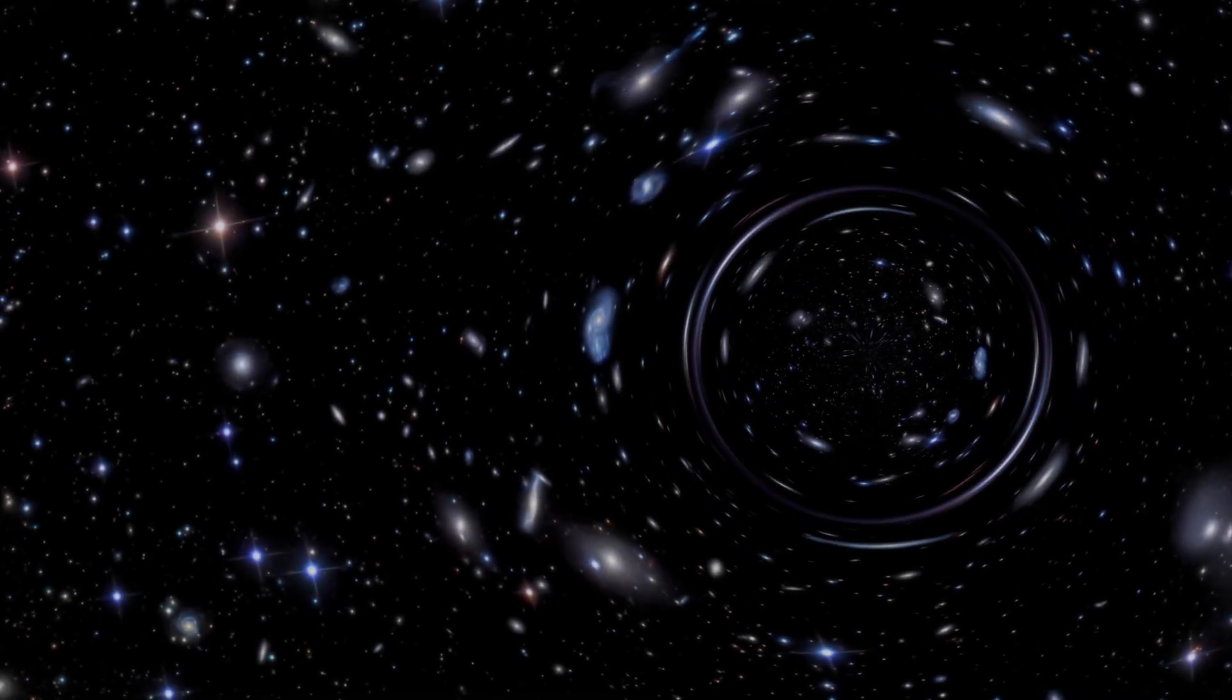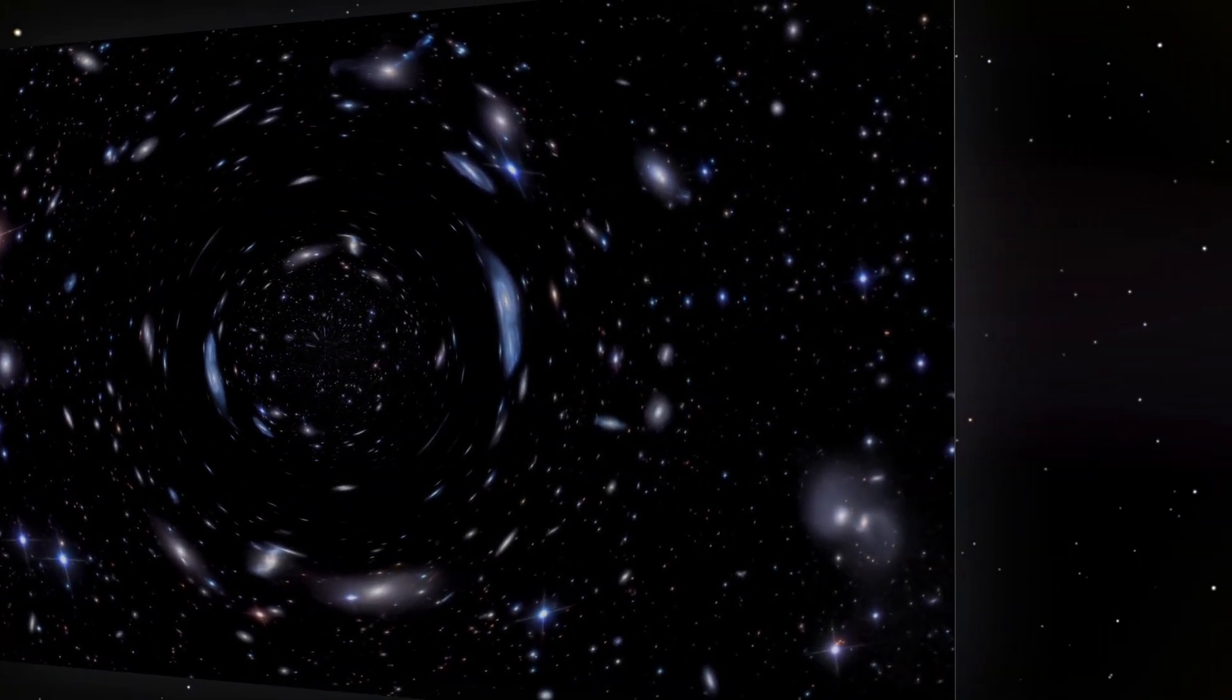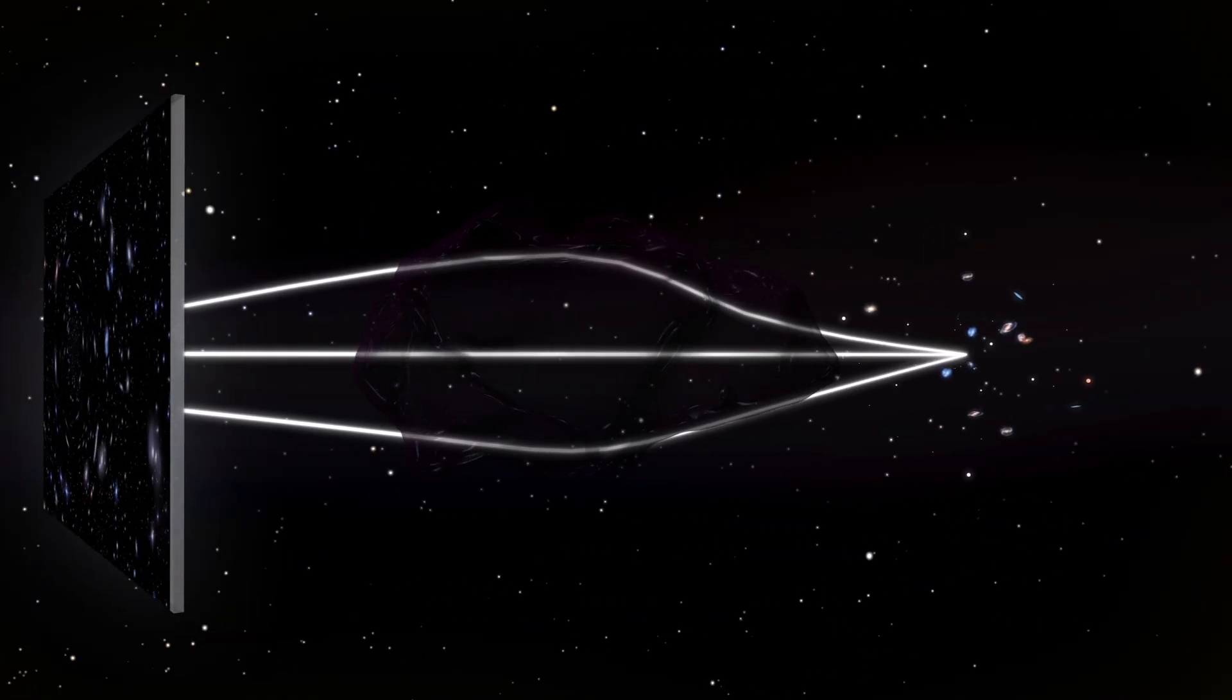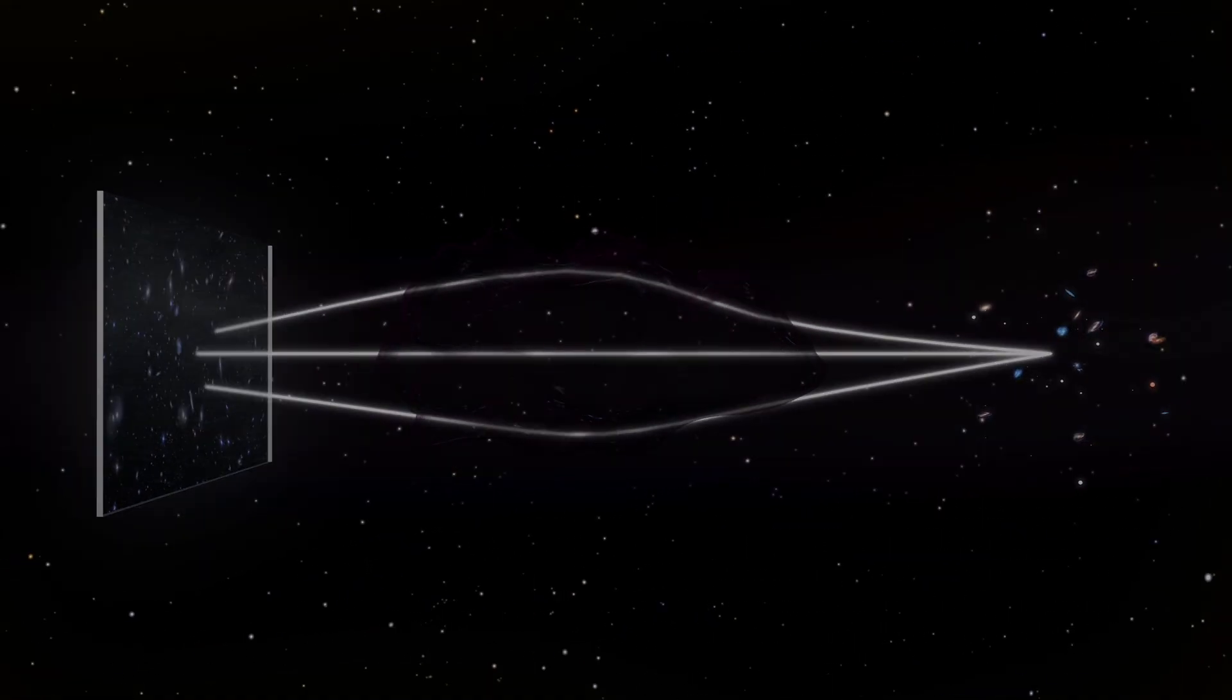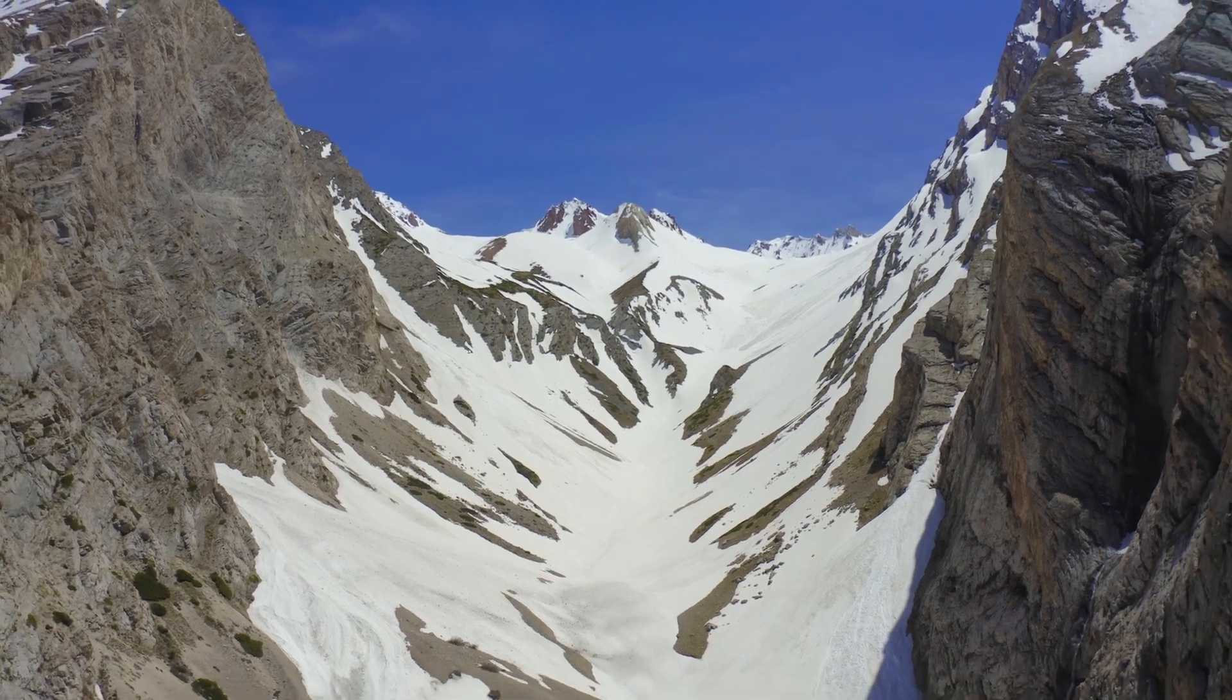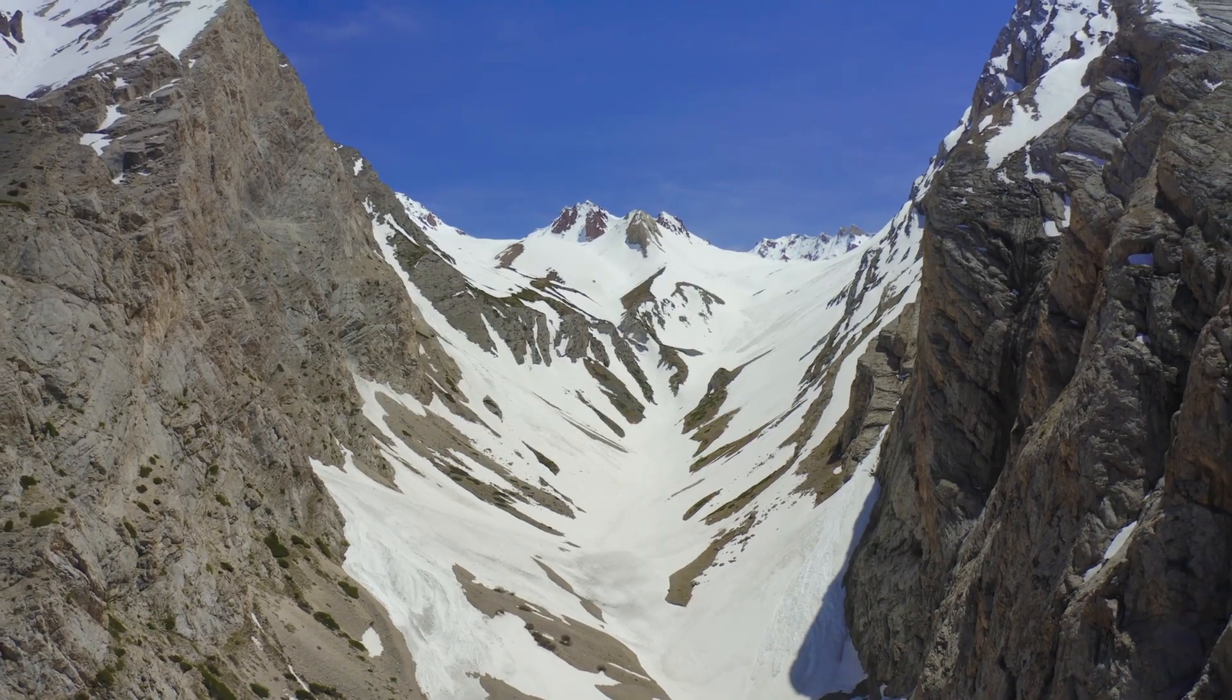You see, light traveling from denser regions into our local underdense region would stretch differently. That stretch could mimic the effects of dark energy, without any need for a new, unknown force. It's like being in a valley and thinking the horizon is curved, when in reality, it's your location giving the wrong impression. That's the essence of the local void hypothesis. Our perspective might be skewed because we live in a cosmic bubble.